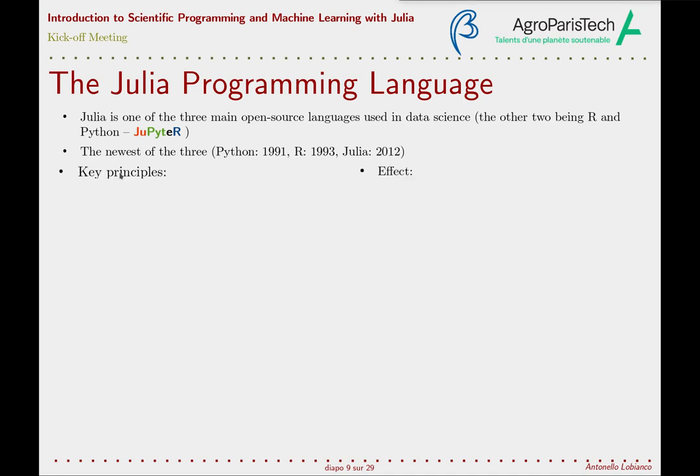I am now going to discuss the key principles that have driven Julia's development. The key characteristics are on the left column, and the implications for the user and programmer are on the right column. It's going to be a very high-level discussion — we will go into the details when we study the language syntax in the next lessons.